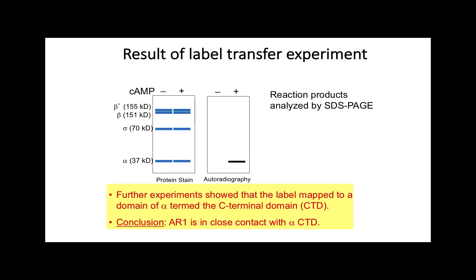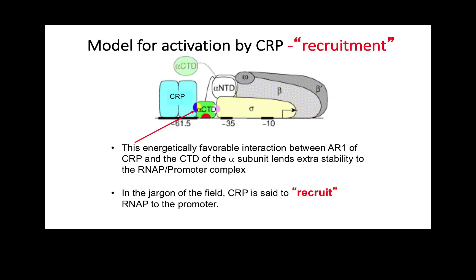This leads to the so-called recruitment model. The idea is that when CRP is bound to the CRP site and RNA polymerase is bound to the promoter, there is an energetically favorable contact between AR1 and the CTD of the alpha subunit. This contact lends extra stability to the RNA polymerase-promoter complex, and so CRP recruits RNA polymerase to the promoter.